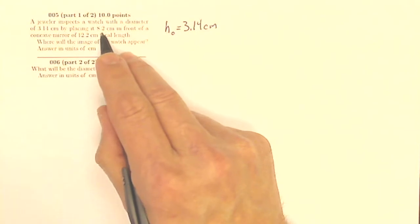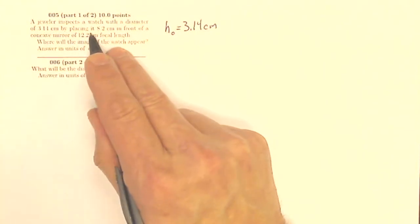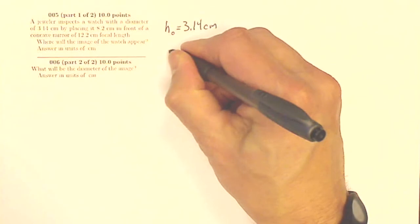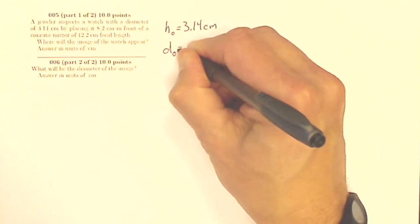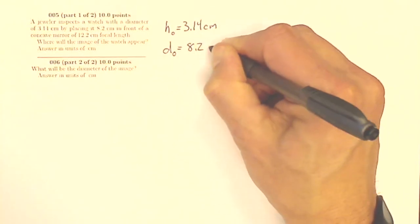By placing it 8.2 centimeters, placing it, so that is my object placed 8.2 centimeters. So that's the distance for the object, is 8.2 centimeters.